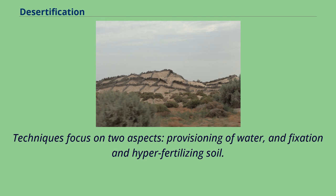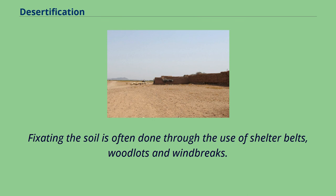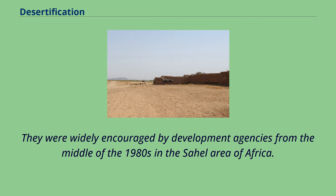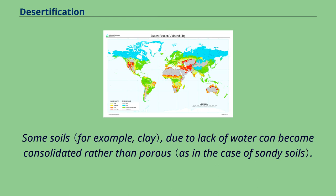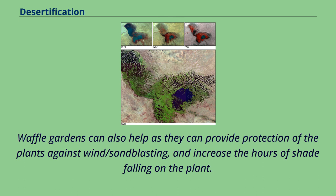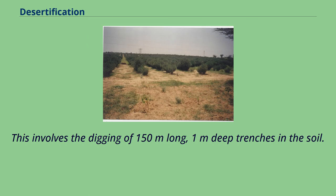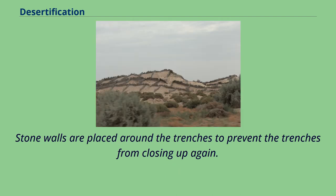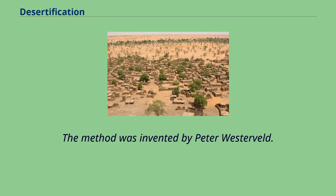Techniques focus on two aspects: provisioning of water, and fixation and hyperfertilizing of soil. Fixating the soil is often done through the use of shelter belts, woodlots and windbreaks — made from trees and bushes to reduce soil erosion and evapotranspiration, widely encouraged by development agencies from the mid-1980s in the Sahel. Some soils, due to lack of water, can become consolidated rather than porous, and techniques such as zai tillage are then used to allow the planting of crops. Waffle gardens can also help by providing protection against wind and sandblasting, and increasing hours of shade on the plant. Another useful technique is counter-trenching, which involves digging 150-meter-long, 1-meter-deep trenches in the soil, parallel to landscape height lines, preventing water from flowing within the trenches and causing erosion. Stone walls are placed around the trenches to prevent them from closing up again. The method was invented by Peter Westerveld.